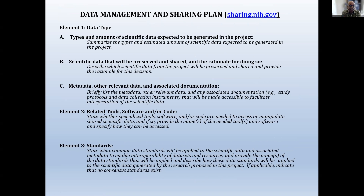The latest new requirement is the data management and sharing plan. All K awardees and beyond — R01 and R21 awardees — will have to include a data sharing plan in your grant applications. This includes the types and amounts of scientific data expected to be generated, scientific data that will be preserved and shared and the rationale for doing so, metadata, and associated documentation. Please see the NIH webpage for data sharing at sharing.nih.gov and check whether your application has data involvement requiring an additional page.